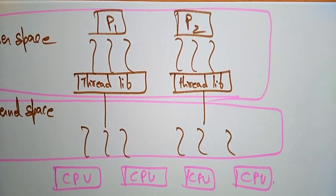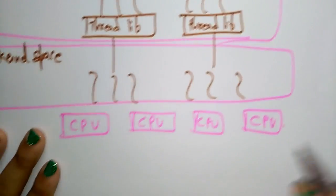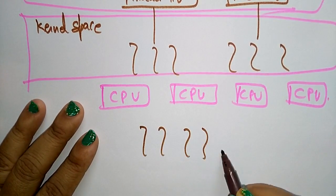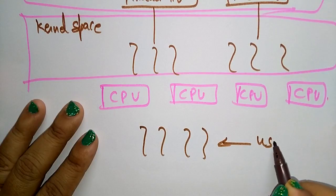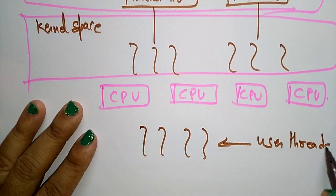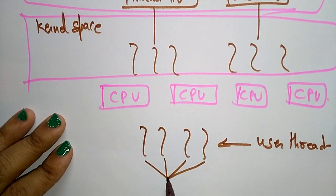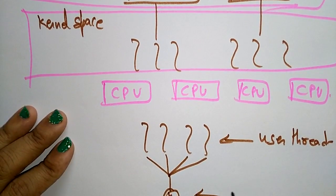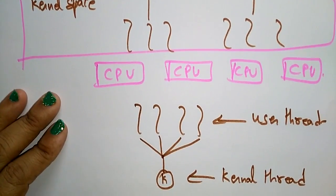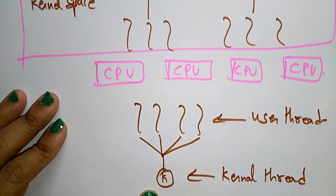Another way to represent it: these many user threads will use only one kernel thread. So in the many-to-one concept, many user threads communicate with only one kernel thread.